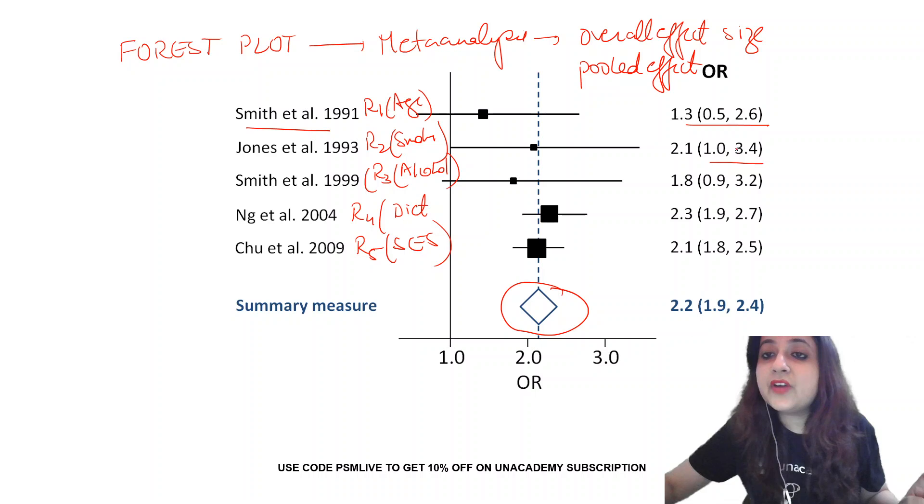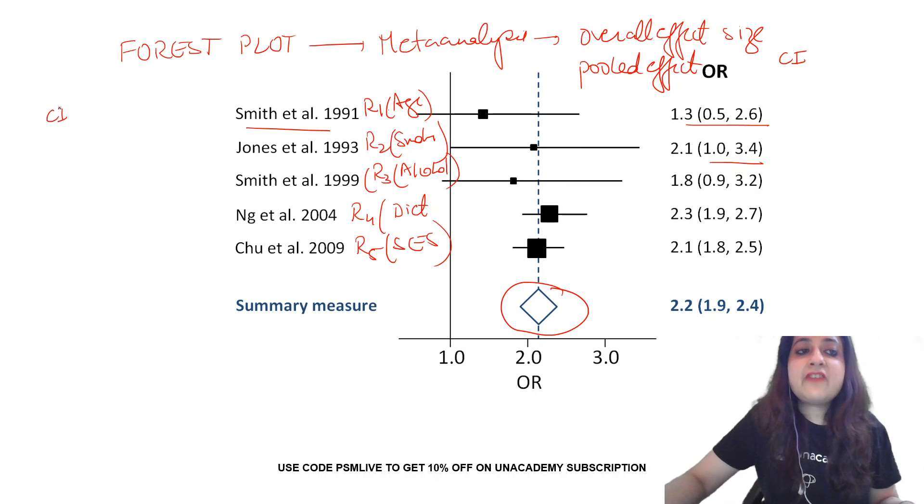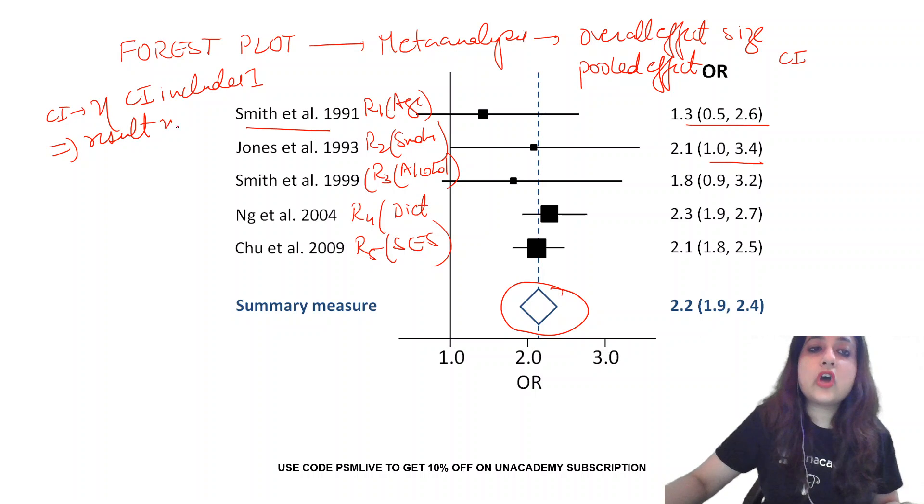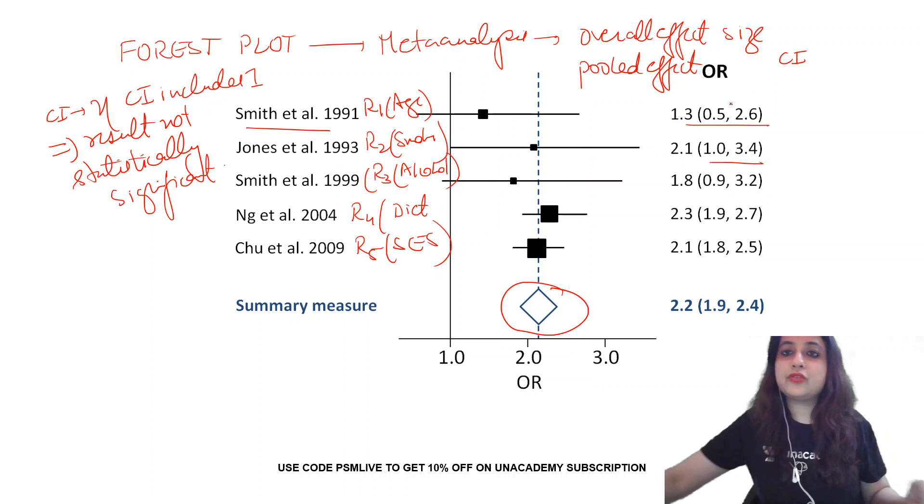For that, I am going to first look at this confidence interval. The golden rule is, if confidence interval includes 1, this implies result is not statistically significant. If it includes 1, it's not statistically significant. Look at the first one, age. It includes 1 in the interval, so not significant.